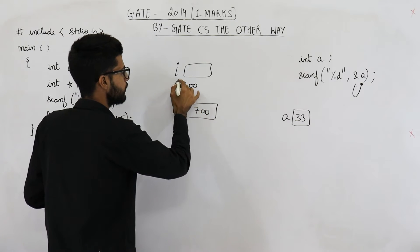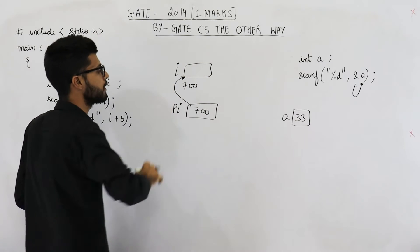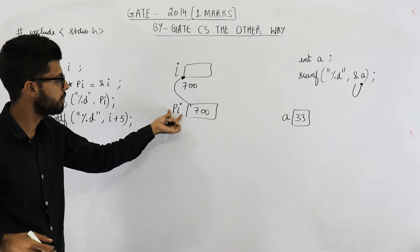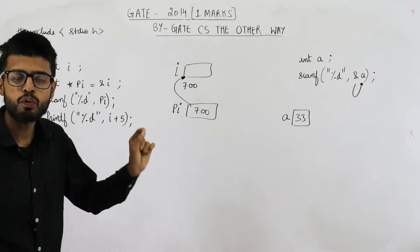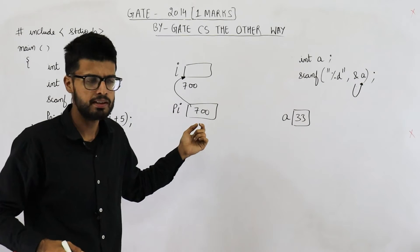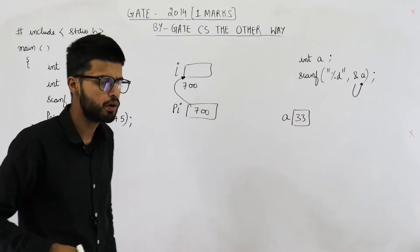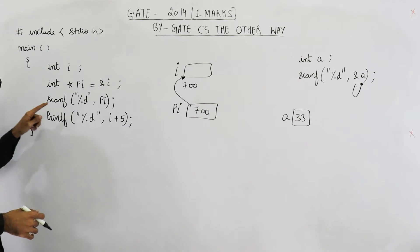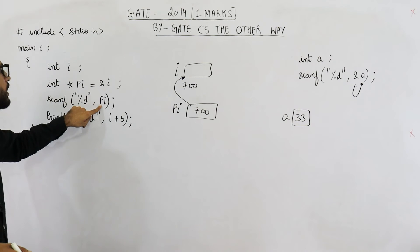So pi is a pointer to variable called i. Its name is pi, maybe for pointer to i. Name can be anything but pi is probably for pointer to i. In the next line you have written scanf %d pi.